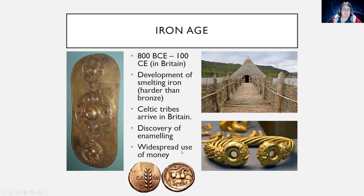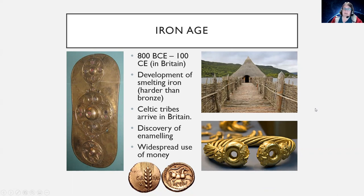The discovery of enameling happened around this time, along with widespread use of gold and torques. The Celts discovered how to smelt iron, which was harder than bronze, and this is when Celtic culture — or the Celtic people — arrived in Britain.